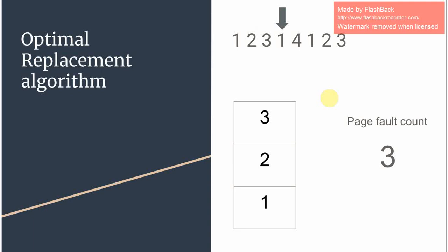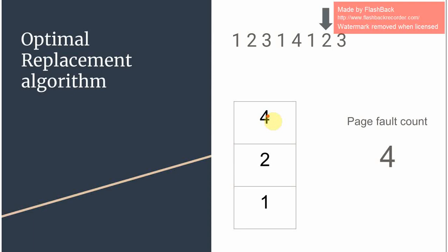Since 1 is already present we do not increase the page count and move on to the next one. When we come to 4 we need to decide what to swap out. Amongst 1, 2, and 3, since 3 occurs farthest from 4, we replace 3 with 4. Then 1 is already there so there's no page fault, and 2 has no page fault either. With 3 there occurs a page fault, and since there are no other pages to be recorded we can replace it with anything, so there's a page fault.